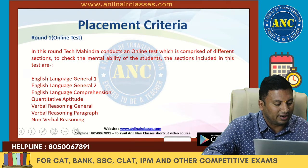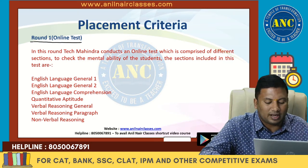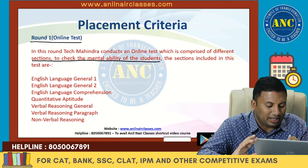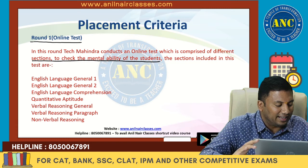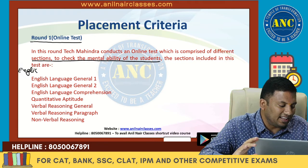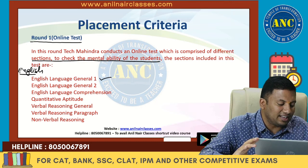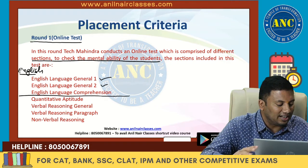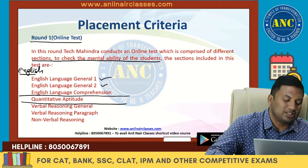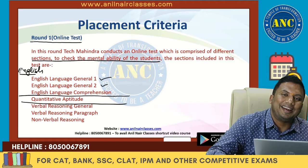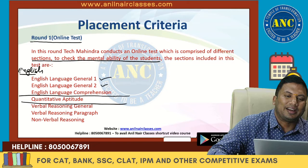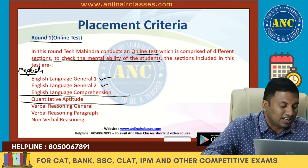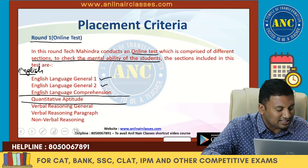In round one, this is a company that gives you different sections under a particular main topic. For example, in English there is English Language General 1, English Language General 2, and English Language Comprehension. There is also quantitative aptitude, and logical reasoning is further divided into verbal reasoning general, verbal reasoning paragraph, and non-verbal reasoning. It conducts an online test with multiple sections in it.